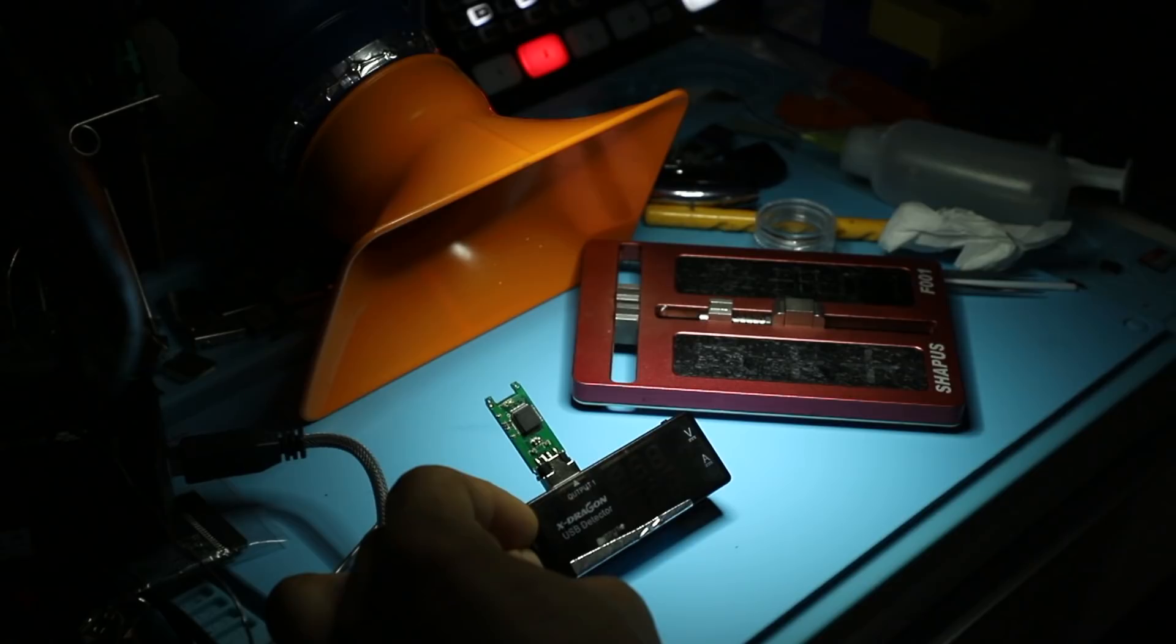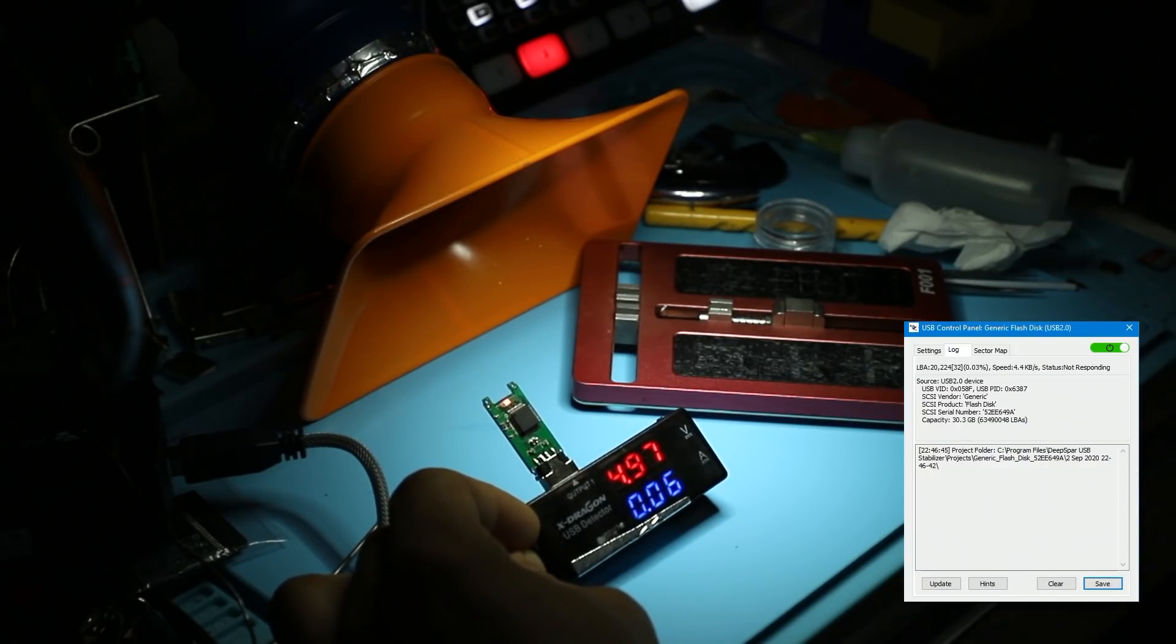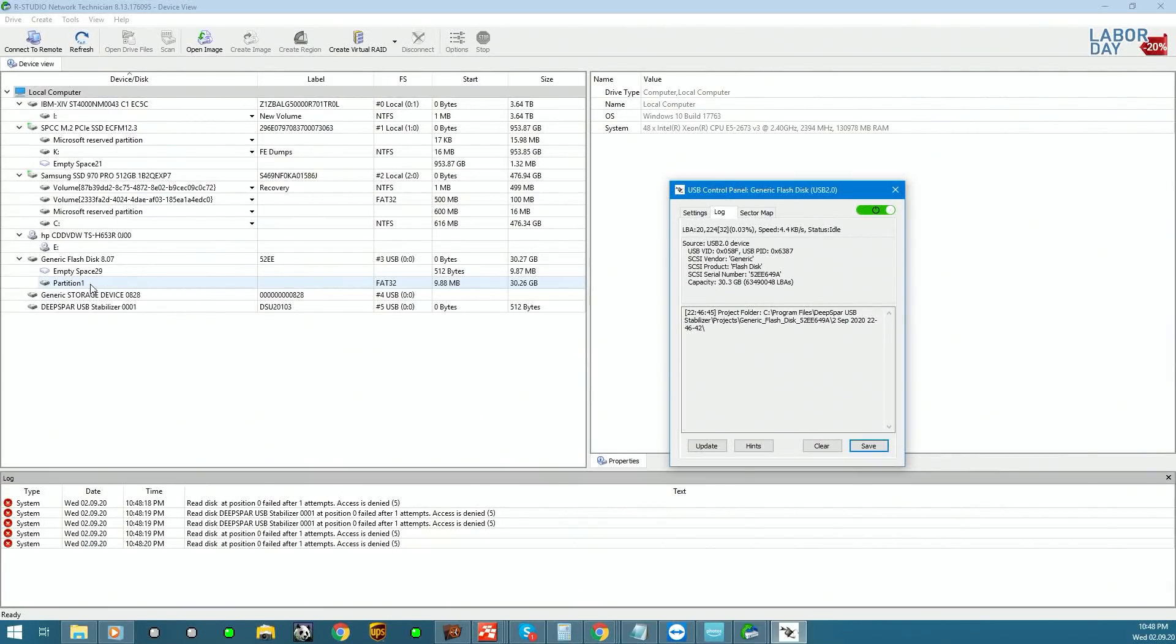And let's power it on. What are we getting? We're getting 60mA, we're getting the LED. You can see a 32GB FAT32 device right away.